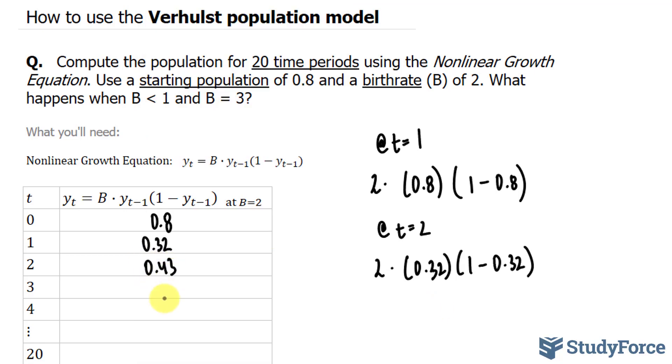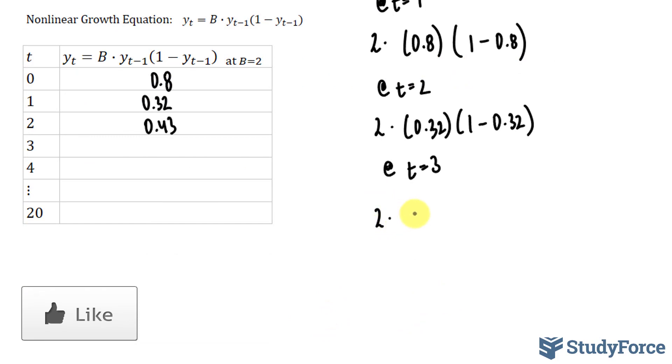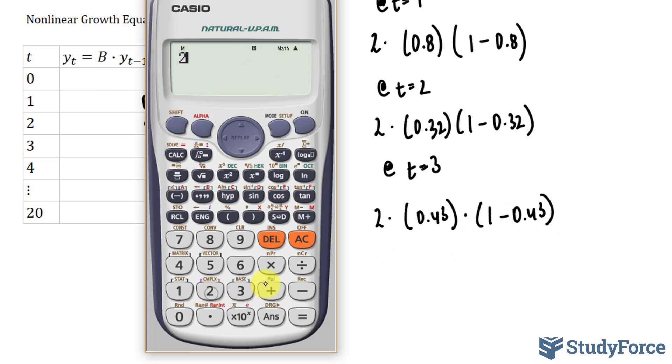Let's do one more before I fill it in for you. At t is equal to 3, we have 2 times 0.43 times 1 minus 0.43. We end up with 0.49.